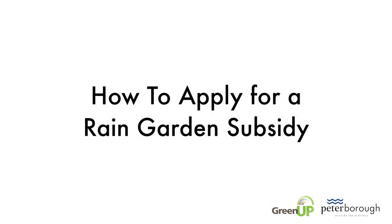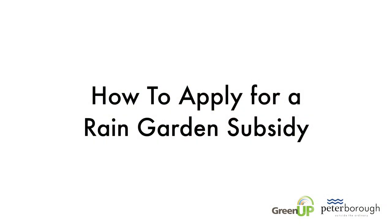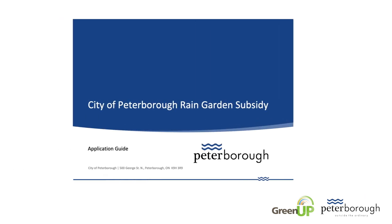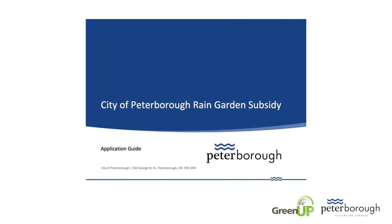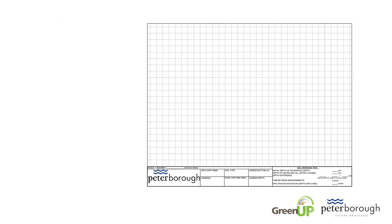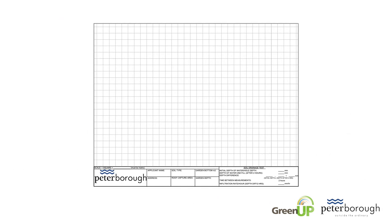To apply for the City of Peterborough's Rain Garden Subsidy, you will need a device with an internet connection, the application guide booklet, and a copy of the design sketch template available in the application guide.